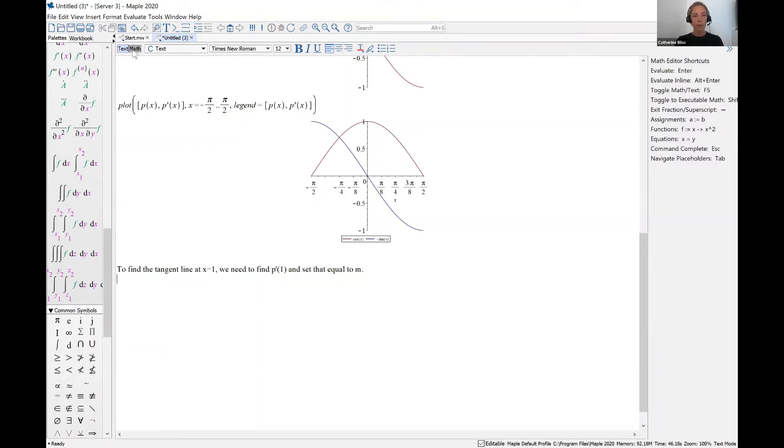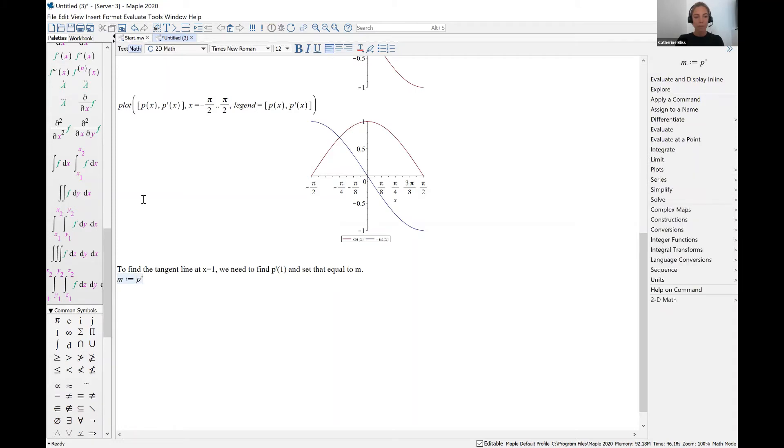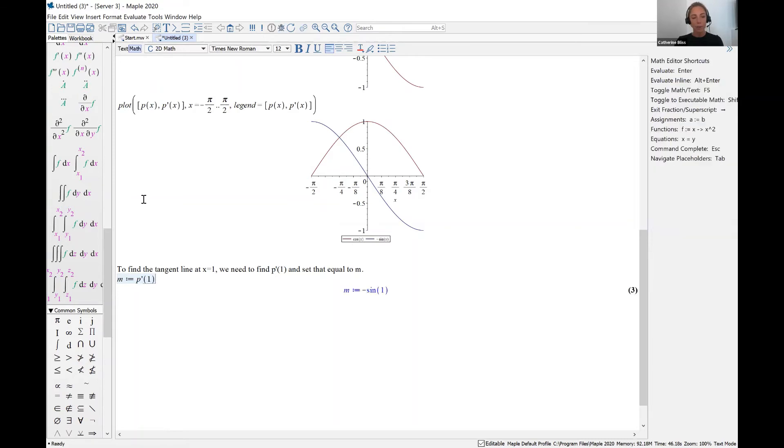I'm going to be in math mode. I'll set m equal, notice I've used a colon equal, because I want Maple to understand that m is going to be equal to a value. And I want to use that value over the next set of calculations. So m is equal to p prime of one, we want to figure out the derivative at x equals one.